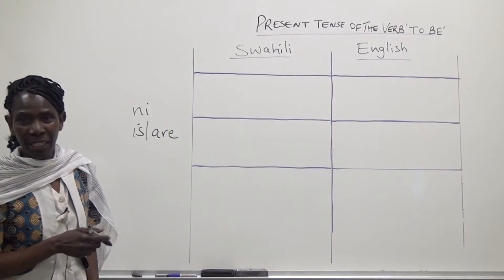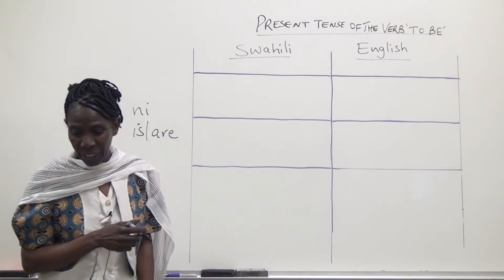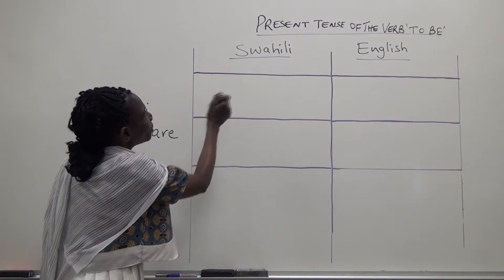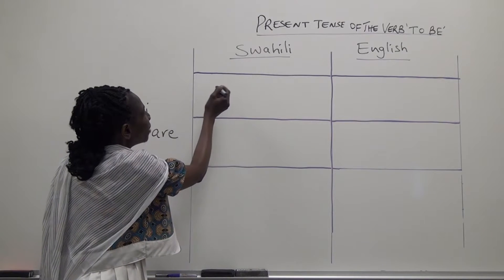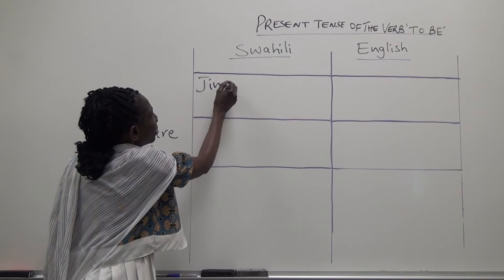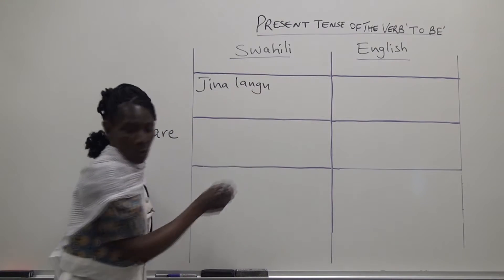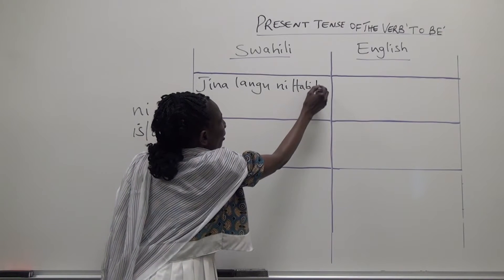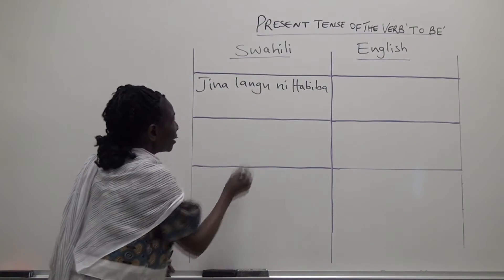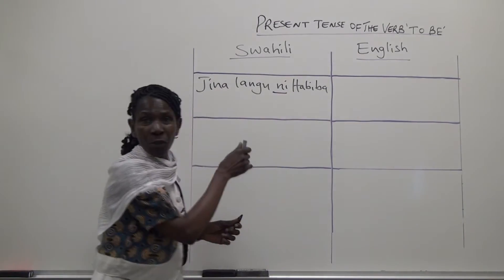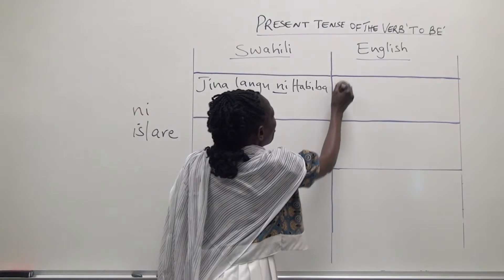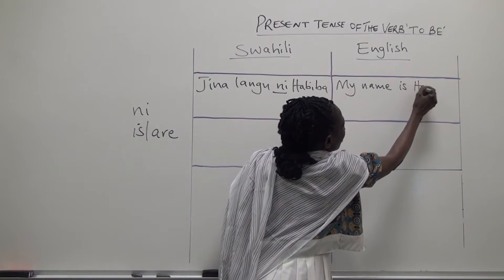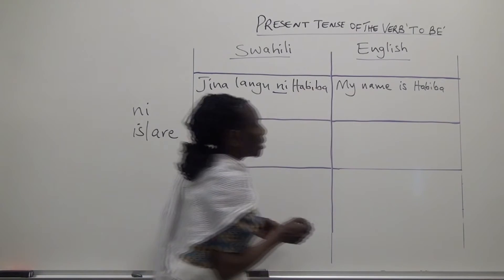We are going to consider a few examples just to help us understand this verb in Swahili. We will first start in Swahili with the sentence: 'Jina langu ni Habiba.' The English translation of this sentence would be: my name is Habiba.